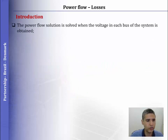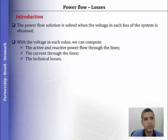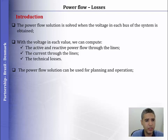The power flow solution consists in computing the voltage in each node of the system. If we have the voltage in each node, we have any other variable: the current through the lines, the active and reactive power through the lines, the losses, etc. We can use the power flow solution for planning — in this case, to define the best contract — or for operation.